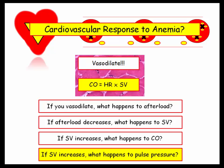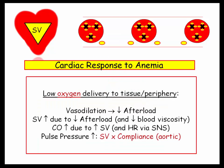Here's a summary of what we just reviewed. The cardiac response to anemia includes vasodilation, which leads to decreased afterload. The stroke volume increases due to decreased afterload and also decreased blood viscosity. The cardiac output increases due to stroke volume, and the heart rate increases via sympathetic nervous stimulation. The pulse pressure does increase, and that is a function of stroke volume times compliance. This is the same situation seen in aortic regurgitation — volume overload leads to widened pulse pressure.